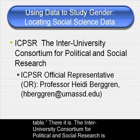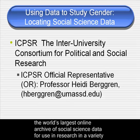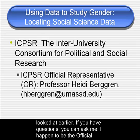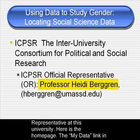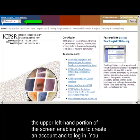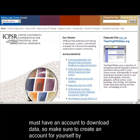The Inter-University Consortium for Political and Social Research is the world's largest online archive of social science data for use in research in a variety of fields, and contains many data sets that can also be located in the other sources we looked at earlier. If you have questions, you can ask me — I happen to be the official representative at this university. Here is the home page. The My Data link in the upper left-hand portion of the screen will enable you to create an account and to log in. You must have an account to download data, so make sure to create an account for yourself by following the instructions.